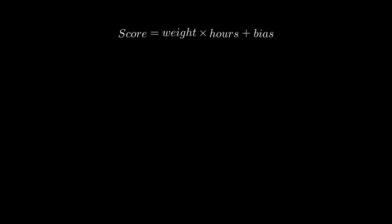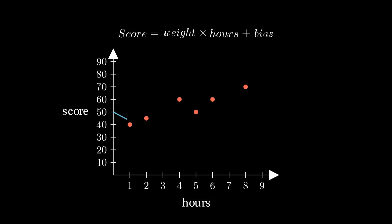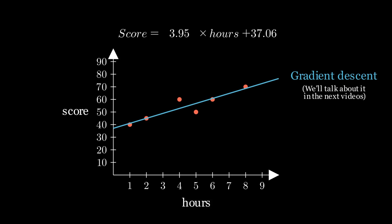During training, the model doesn't know the best weight or bias. It starts with random values, makes predictions, checks how far it is from the correct answers, and then updates the weights and bias using an optimization algorithm like gradient descent. This process repeats. The model learns by adjusting weights and bias, gradually improving the accuracy of its predictions.